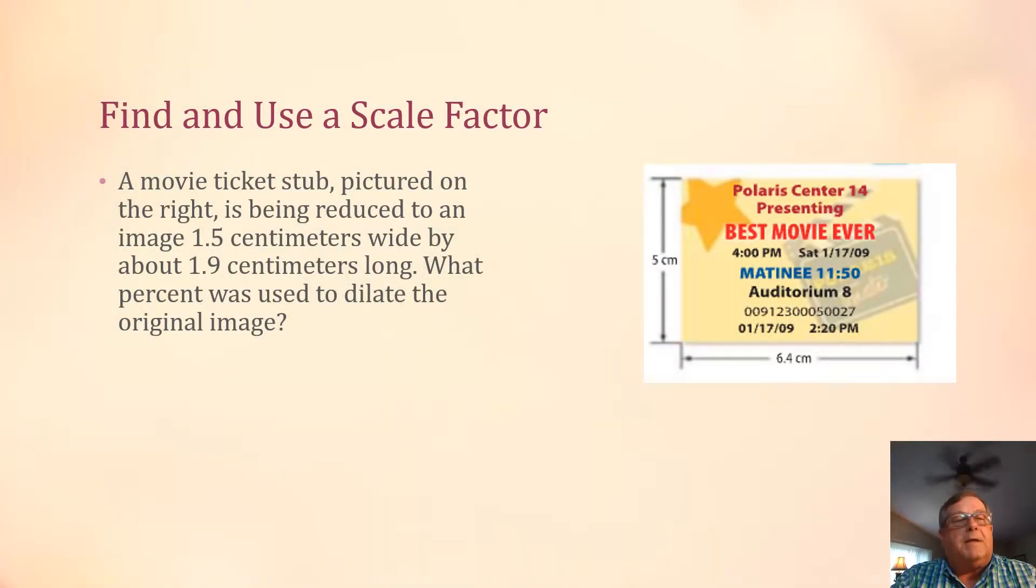Now let's look at how we can take some information about a pre-image, along with some information that we're given about the image, and see if we can determine the scale factor. I've changed this a little bit from what you see in your book there on page 512 to better fit what we're doing. But here on the right, we see a movie ticket stub and its dimensions.